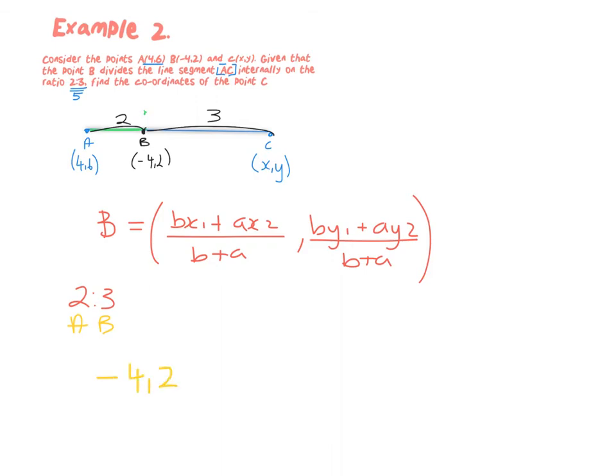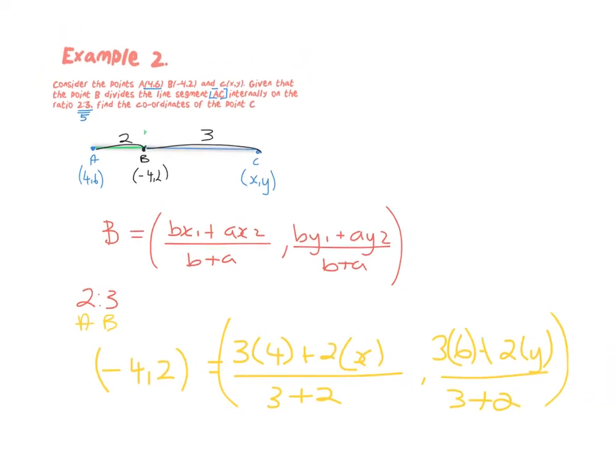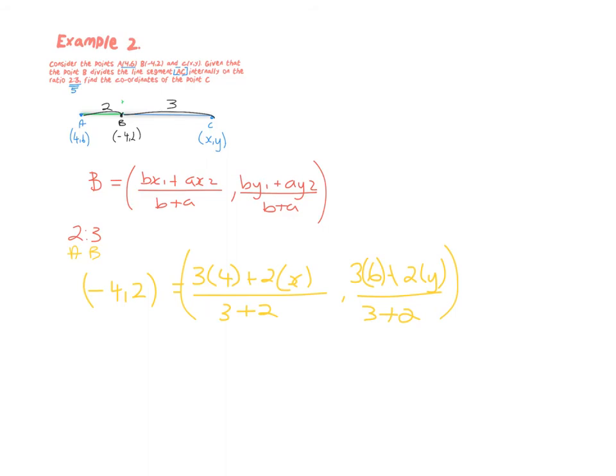I will write (-4, 2) is equal to: 3 (remember my b was 3) times 4 plus 2 times x (I don't know the answer so I'll leave it as x), all over 3 plus 2. In my other coordinate I have 3 times 6 plus 2 times y, all over 3 plus 2. If I work that out a bit more, I'm going to get (-4, 2) equals (12 + 2x)/5 and the other one is (18 + 2y)/5.